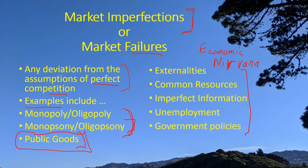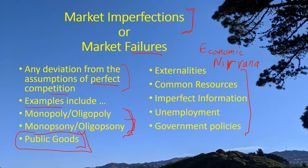Whenever we introduce market imperfections or market failures, we're also introducing an argument for government to come in and help correct for these particular problems — to improve the market through its intervention. This gives us a series of arguments where the presence of government can actually make the economic system work more effectively, becoming a strong argument in support of a government to monitor and improve economic outcomes.